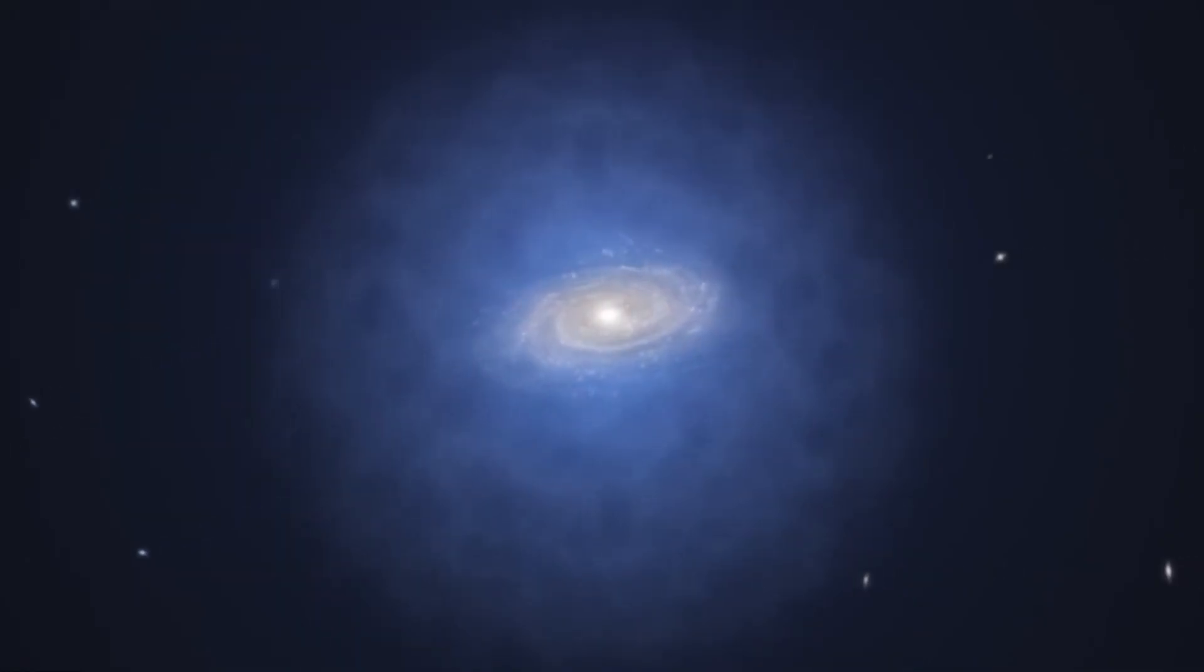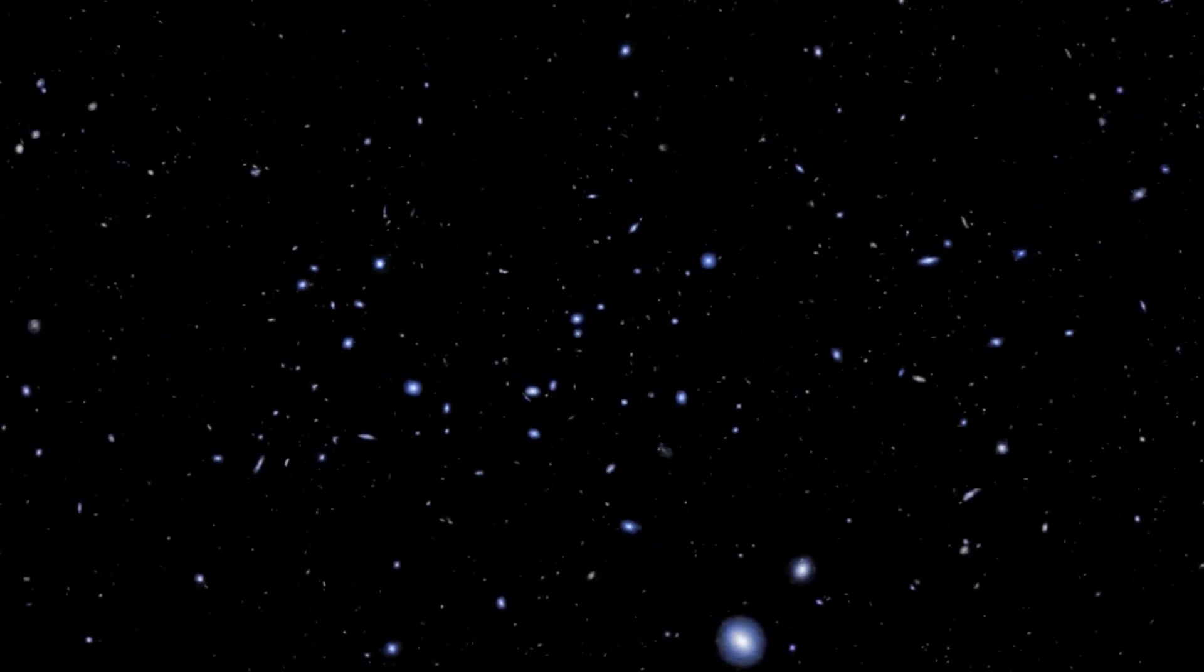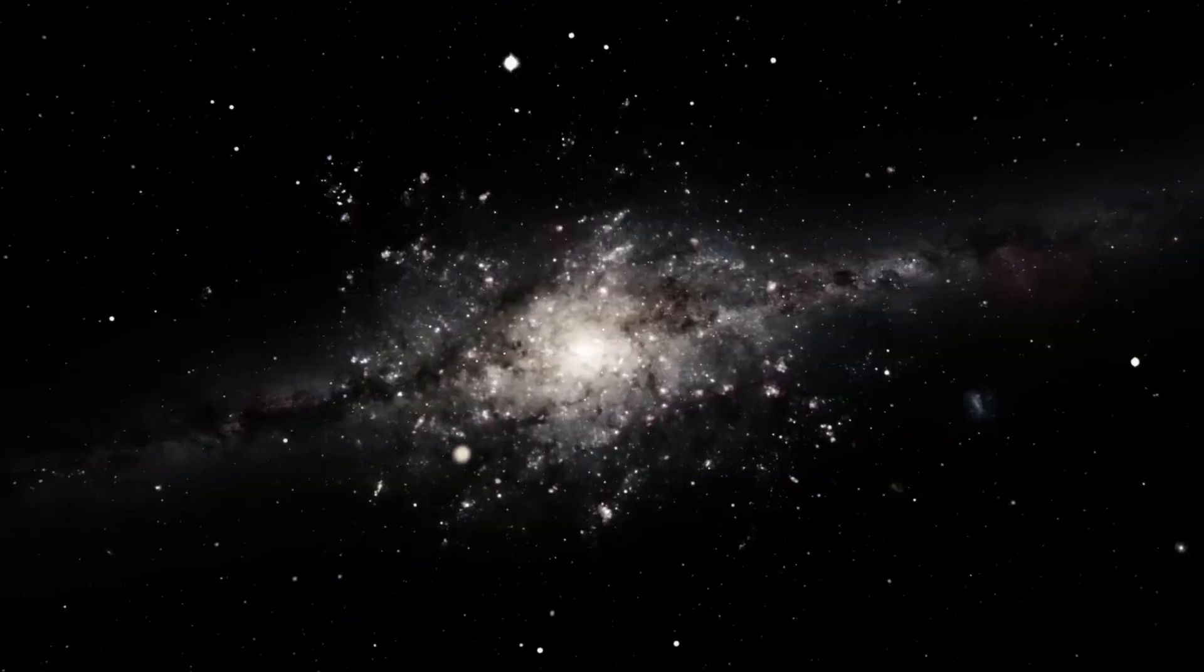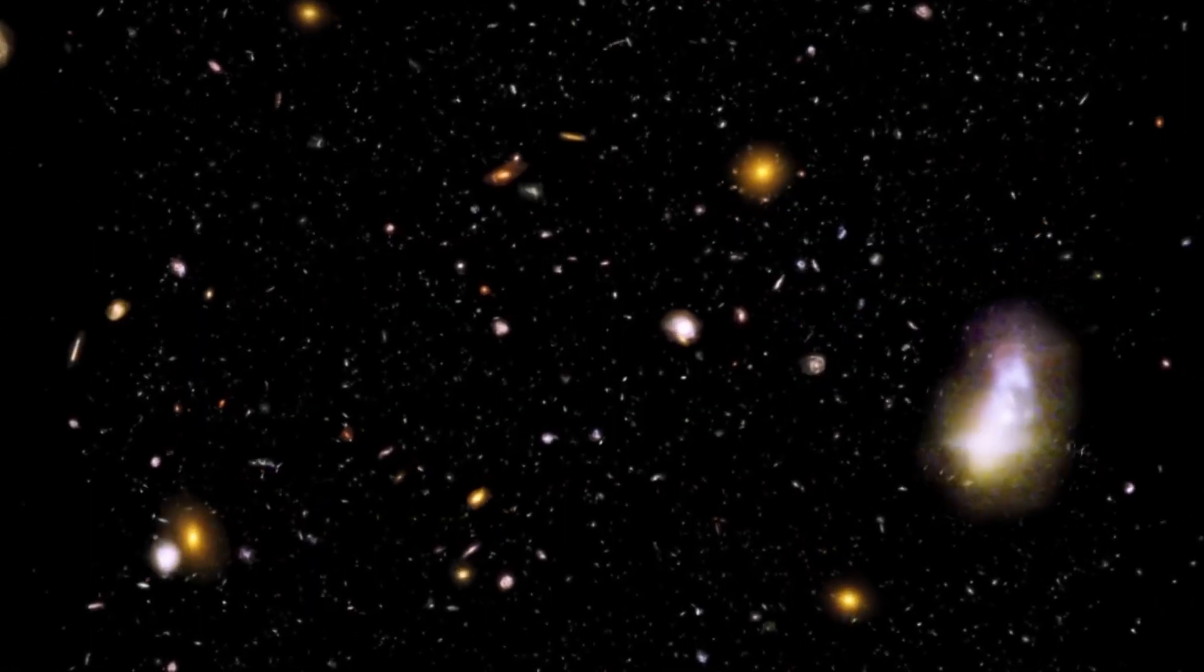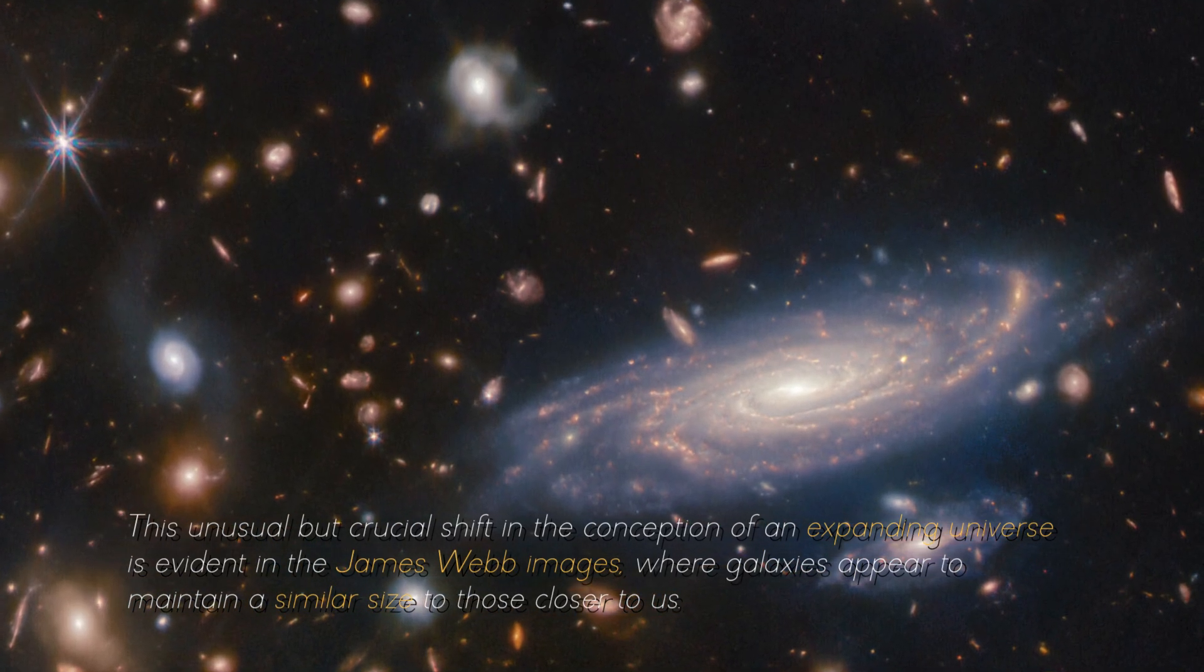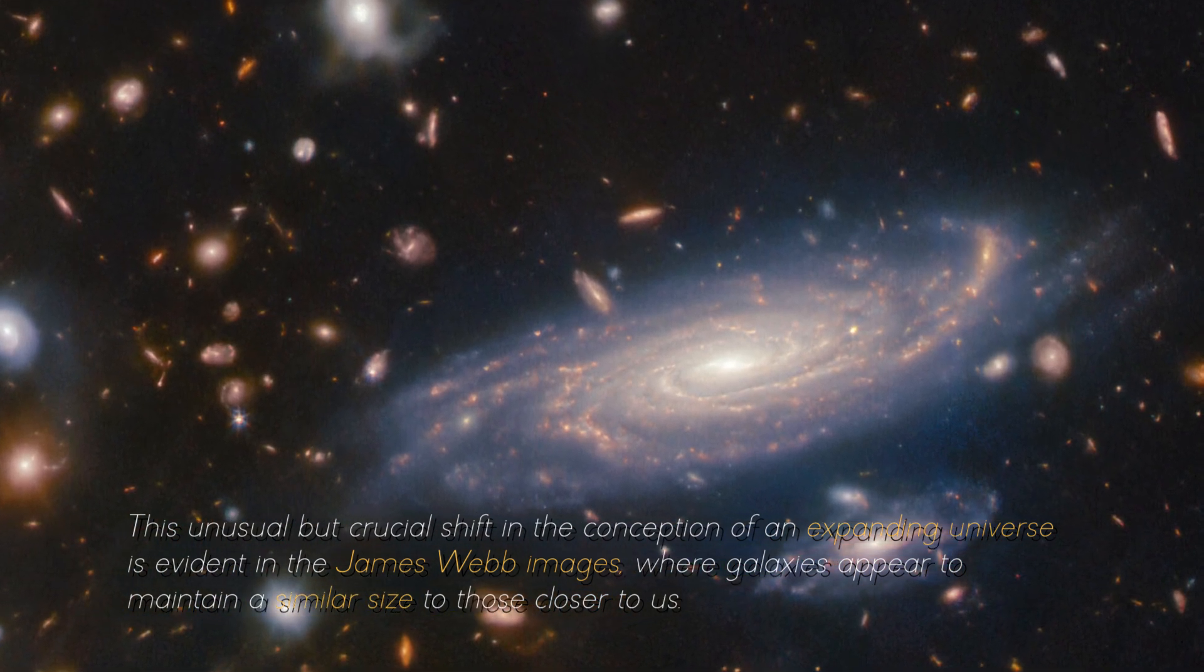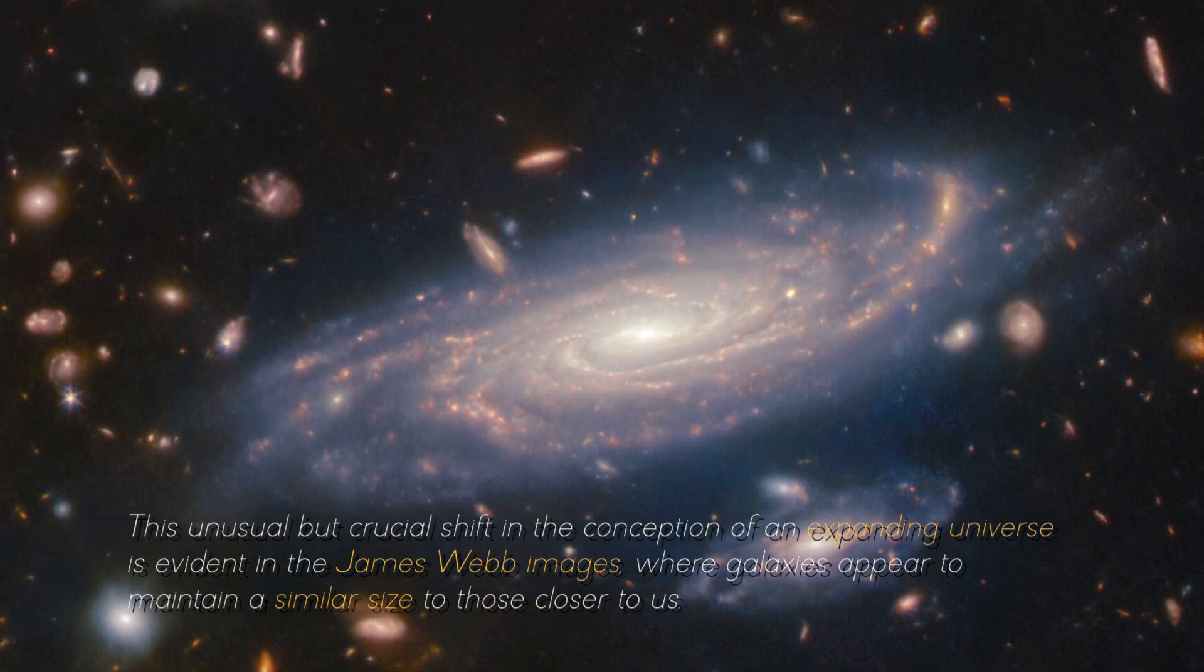Moreover, their numbers are surprisingly high. To simplify these discrepancies, imagine the universe as an expanding globe. According to conventional theory, galaxies should not appear smaller as they move away from us. At a certain point, they should begin to appear larger since their light would have had to travel from when they were closer. This unusual but crucial shift in the conceptions of an expanding universe is evident in the James Webb images, where galaxies appear to maintain a similar size to those closer to us.